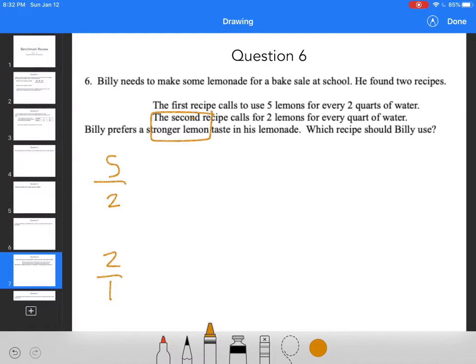So when I reduce that, when I divide it out, five divided by two, I get two point five lemons for every one quart of water.